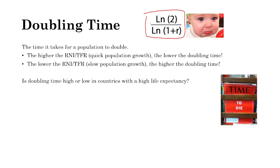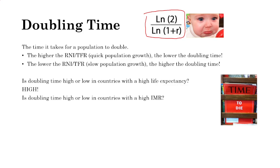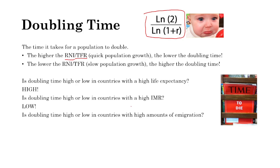Doubling time is high in countries with high life expectancy — developed countries — because their RNI is low or even negative, so it takes very long to double the population. Countries with high infant mortality rates are less developed, with higher TFRs and higher RNIs, so they have a low doubling time. Countries with high amounts of emigration are losing population, so it takes much longer to double — giving them a high doubling time.